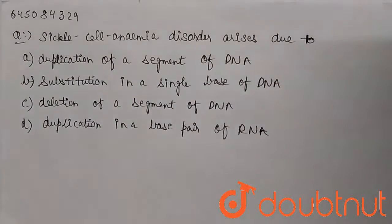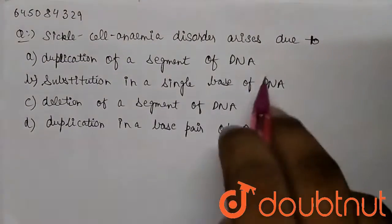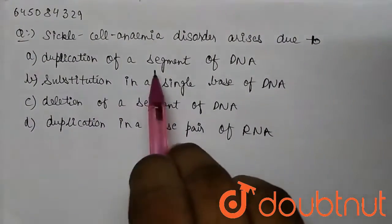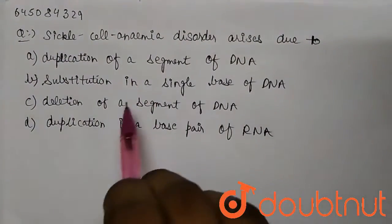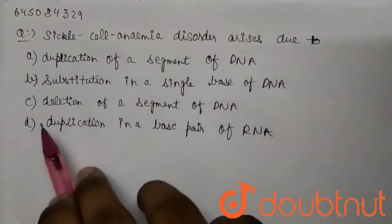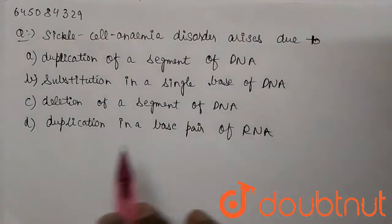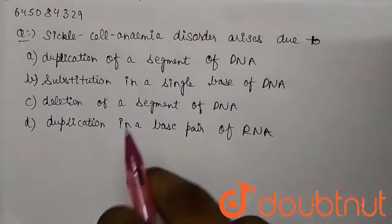The question is: sickle cell anemia disorder arises due to — option A: duplication of a segment of DNA; option B: substitution in a single base of DNA; option C: deletion of a segment of DNA; and option D: duplication in a base pair of RNA.